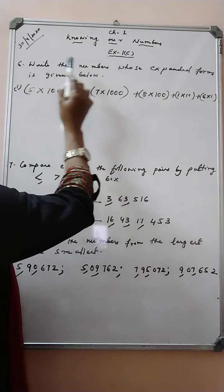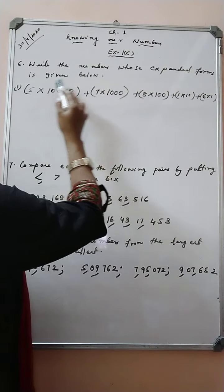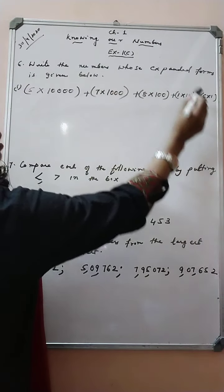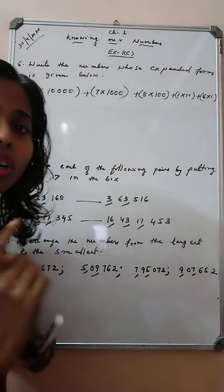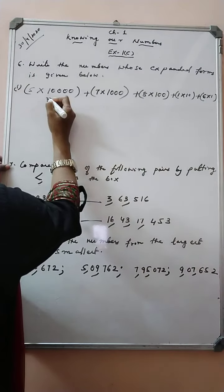Question number 6. Write the numbers whose expanded form is given below. Our question is given in the expanded form. We have to write the answer in the compact form. So, let's see.